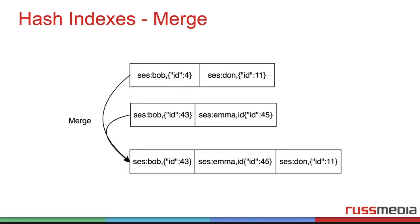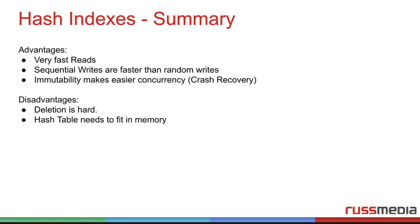For that, we have a merge process as well. Bob, for example, here in this segment file we have Bob and Don. In this second segment file, we have Bob and Emma. So we basically have different data in different files, and we need to include in our hash table in memory the file reference as well.